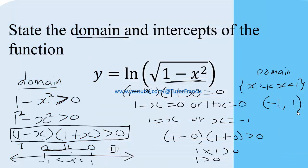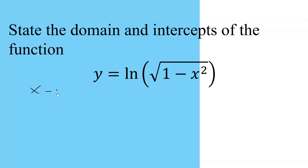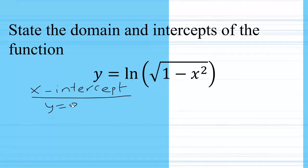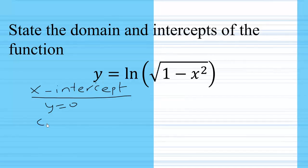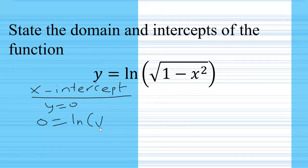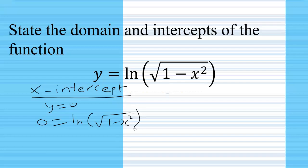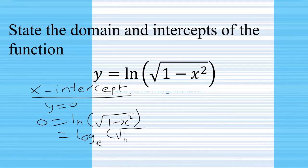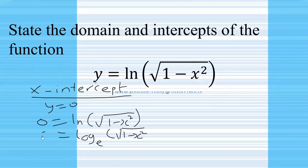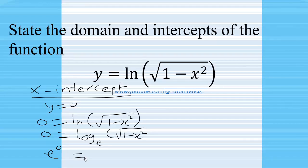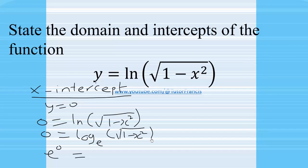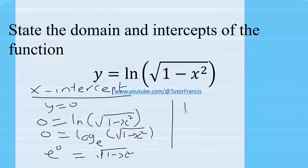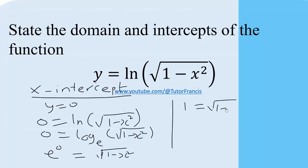Now let's find the intercepts. For the x-intercept, we set y equal to 0, giving us 0 equals ln of the square root of 1 minus x squared. Rewriting this as log base e of the square root of 1 minus x squared equals 0, we convert to exponential form: e to the power of 0 equals the square root of 1 minus x squared.